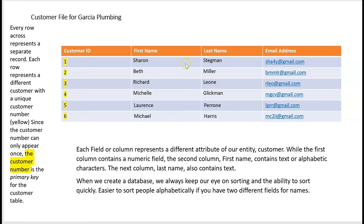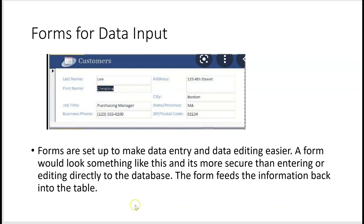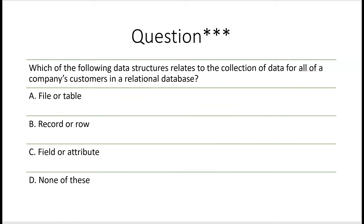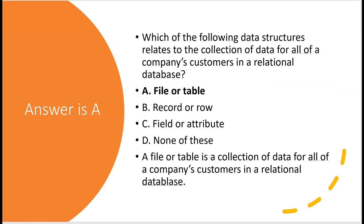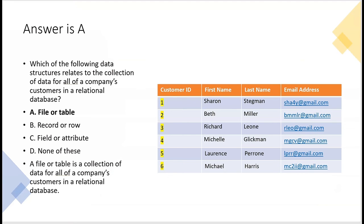While you could edit data directly in the database, it's risky — you could change the wrong customer's email address. Instead, forms are set up to make data entry and editing easier and more secure; the form feeds information back into the table. Let's try a question: which data structure relates to the collection of data for all of a company's customers in a relational database? The answer is A — a file or table. A file or table is a collection of data on one topic, such as all customers.